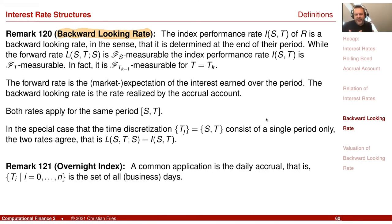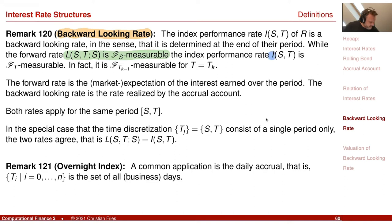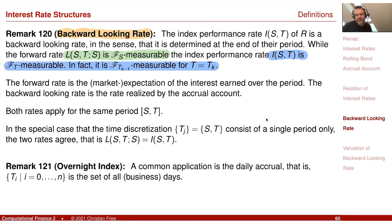While the forward rate is known at the beginning of the period and expresses what the market is expecting, the backward rate is what has been realized. So there is a difference in measurability: L is F(s)-measurable but I is F(T)-measurable. These backward rates are very important — they are part of the definition of financial products. A very important representative is an overnight index where the time discretization is actually just one day.